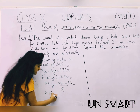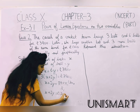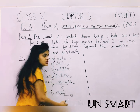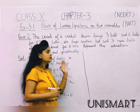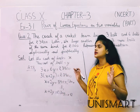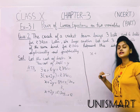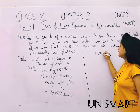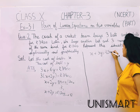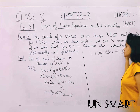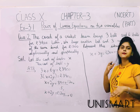Now we form the second equation. She buys another bat, that is x, and three more balls, that is 3y, for 1300 rupees. So the second equation is x plus 3y equals 1300.